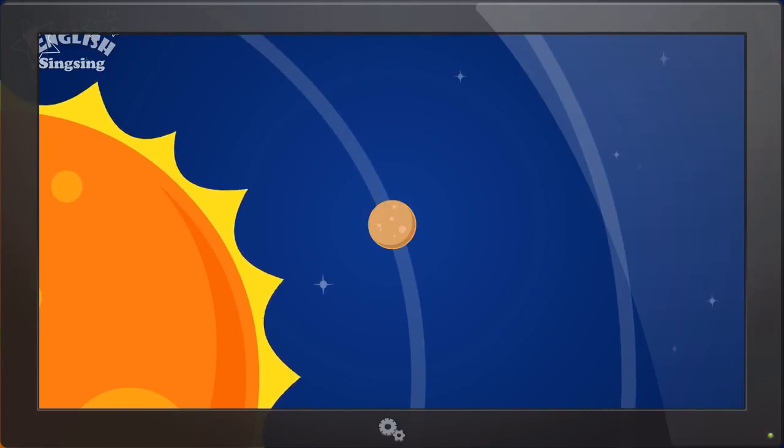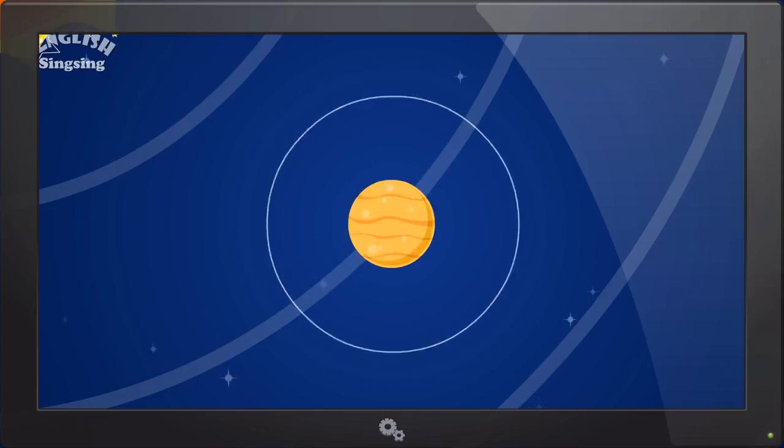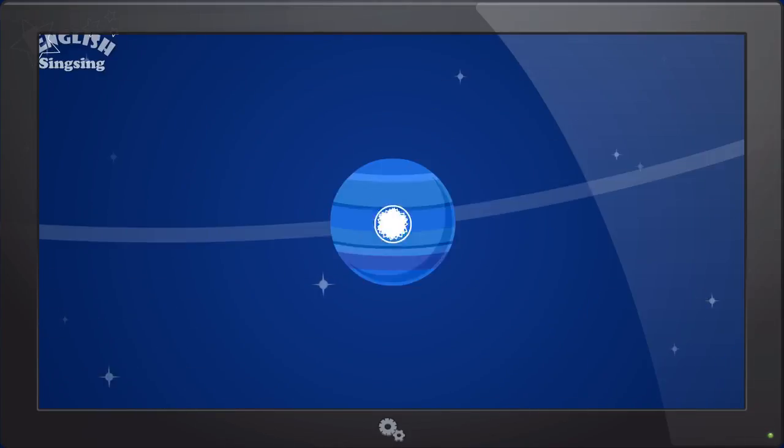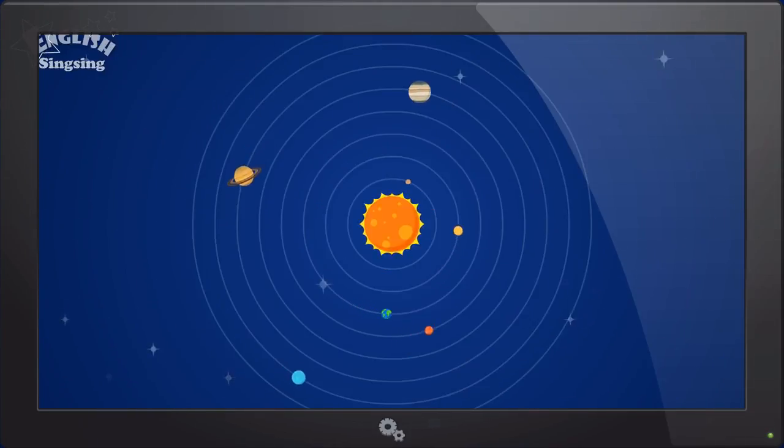There are Mercury, Venus, Earth, Mars, Jupiter, Saturn, Uranus, and Neptune. They go around the sun.